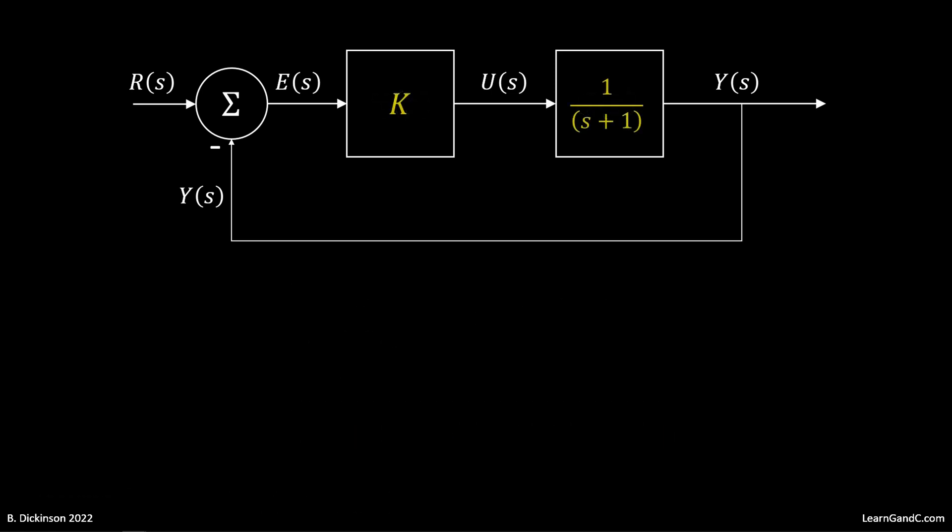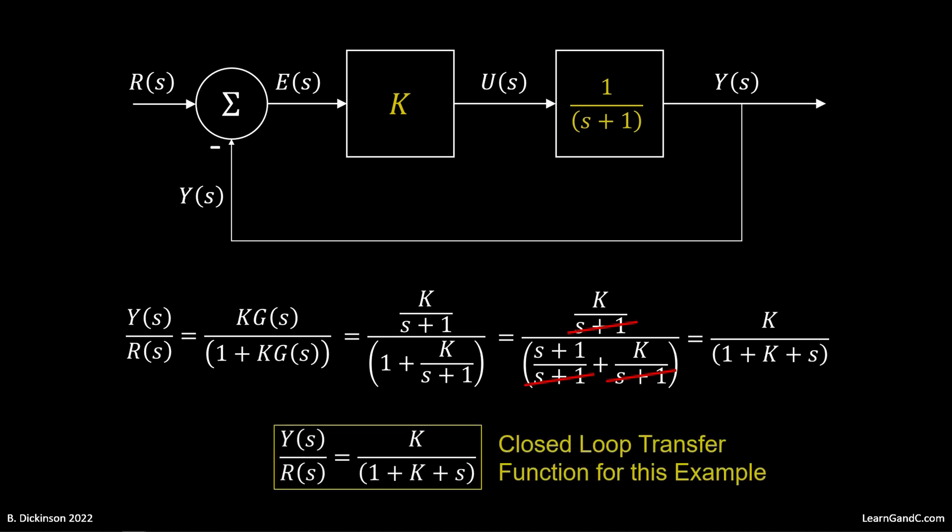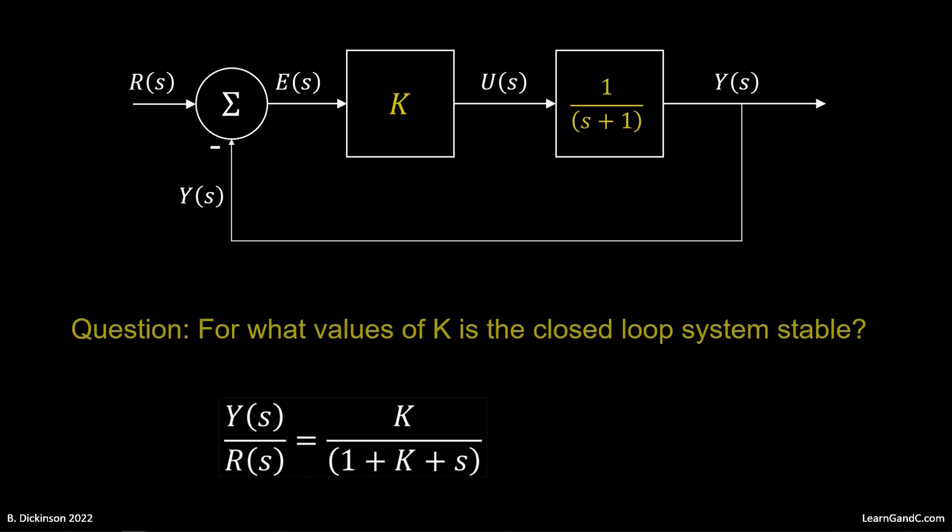Let's determine the closed-loop transfer function for this first-order plant with a proportional gain controller. Substituting in, canceling terms, we arrive at the closed-loop transfer function for this example. Question: For what values of K is the closed-loop system stable?